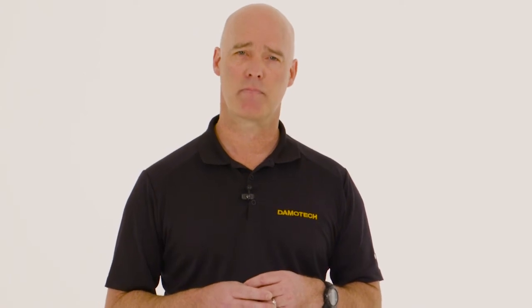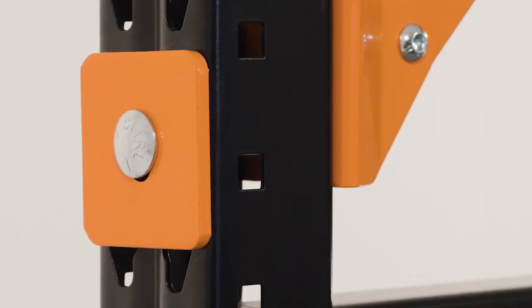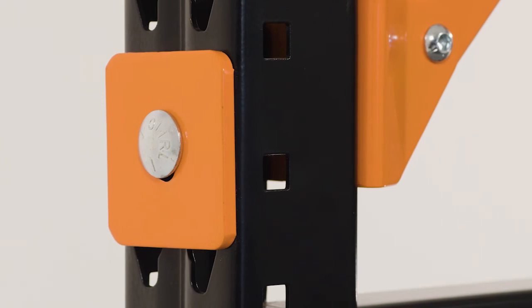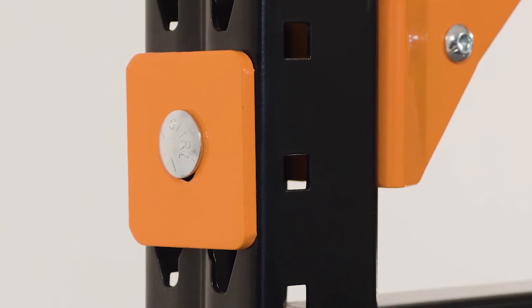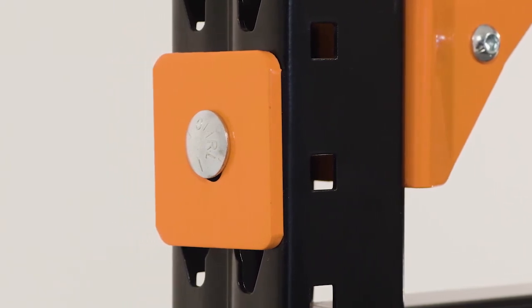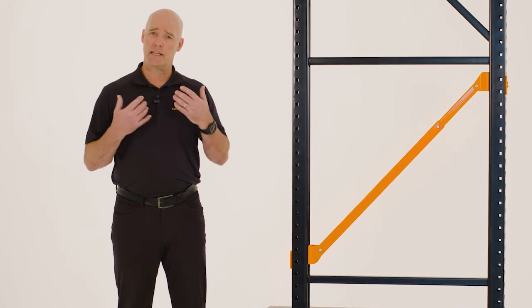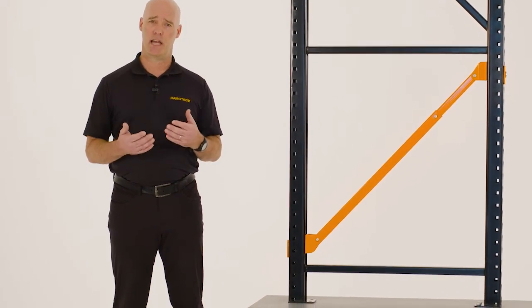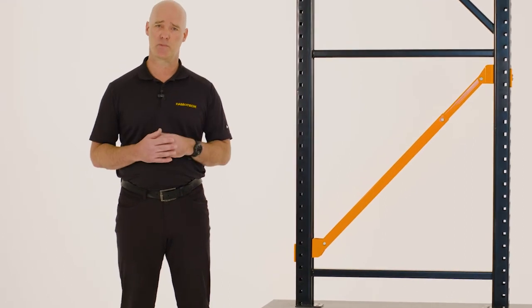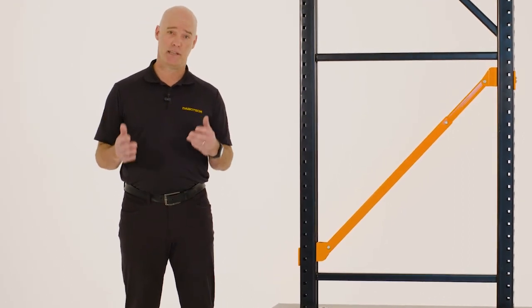How much money would I be able to save by using the Damabrace over, let's say, replacing an upright? A great question. You know, I think it varies on the cost of the upright and the number of beam levels that you would have to remove to replace an entire upright. But what we're getting is feedback from our customers. It's on or around 80 to 85% savings by utilizing our adjustable brace solution versus replacing the entire upright.